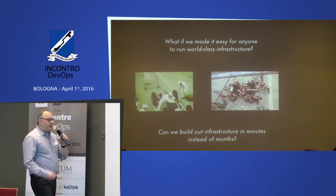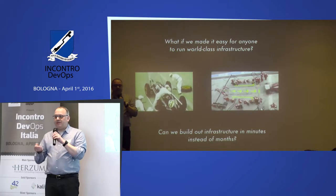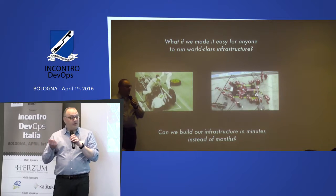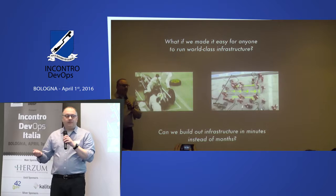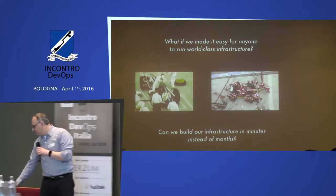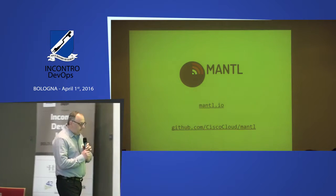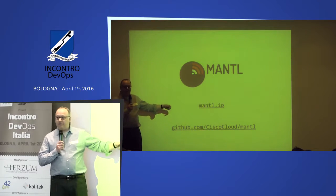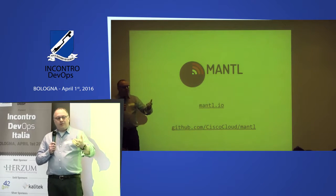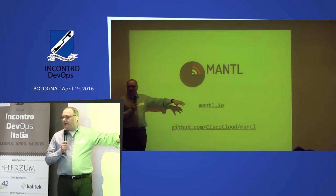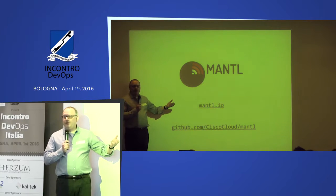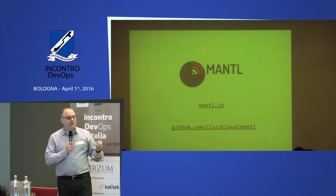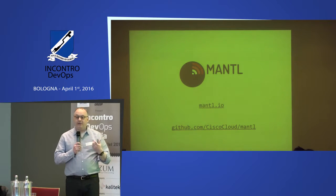That's the idea behind Mantle — what if we could make an open-source project that automates a lot of these base tasks, making it really easy to do things like Kubernetes and Mesos, and spin it all up in a few minutes? The project is called Mantle, sponsored by Cisco, which uses it as a reference platform for their customers. Cisco bases their internal systems on it, and when a customer buys a UCS rack they can install Mantle on it.